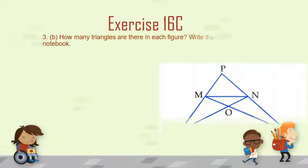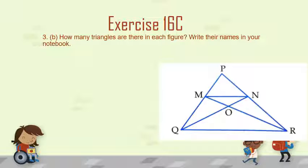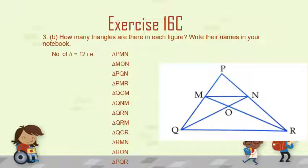Now let's come to question number 3: how many triangles are there in the figure? Write their names in your notebook. The triangles in this figure are: triangle QNM, triangle QRM, triangle RMN, triangle RON, triangle PQR.